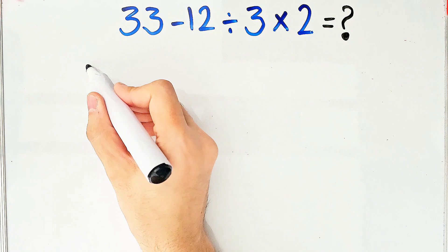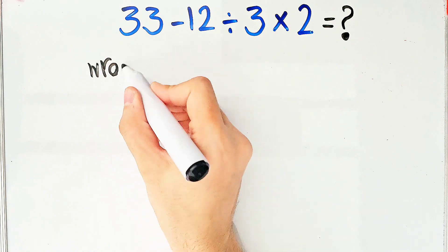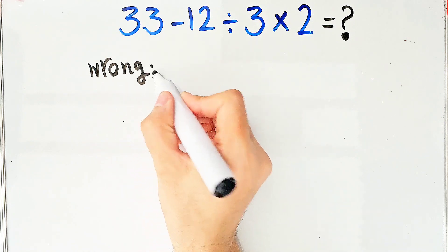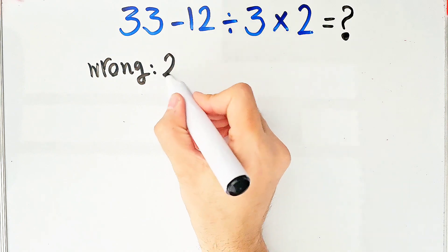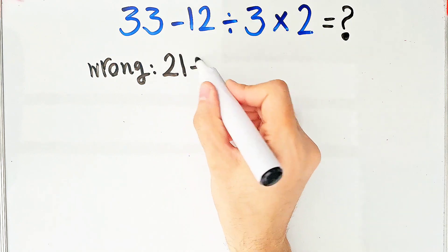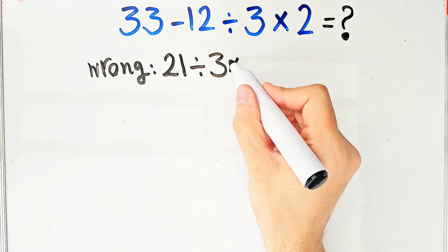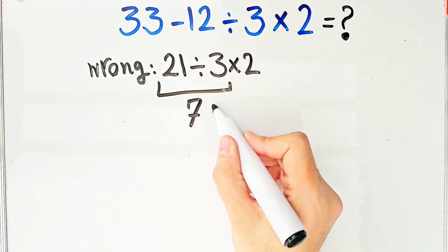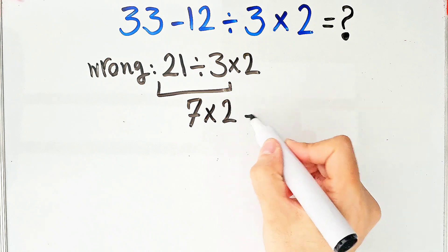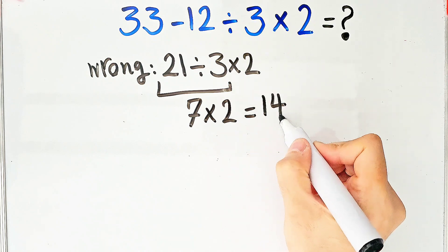In the wrong way of solving this question, some people solve this question like this. They start from the left and simplify the question. 33 minus 12 equals 21. 21 divided by 3, then times 2. 21 divided by 3 equals 7, and 7 times 2 equals 14. But this answer is definitely wrong.